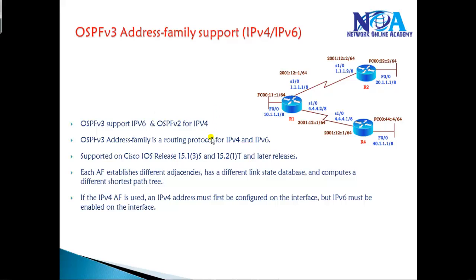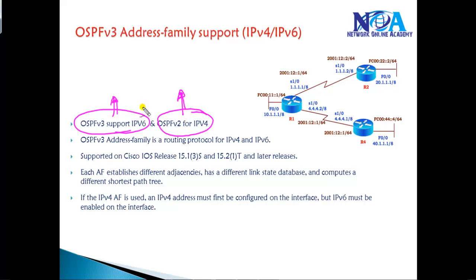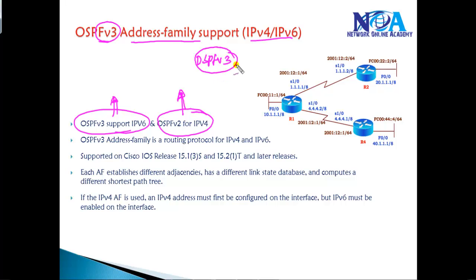Let's cover some basics before getting into the actual command line. OSPFv2 is for IPv4, and OSPFv3 was originally introduced for IPv6. Now there is OSPFv3 address family support, where you can have both IPv4 and IPv6 configurations under the same process — configuring only one process instead of separate configurations.